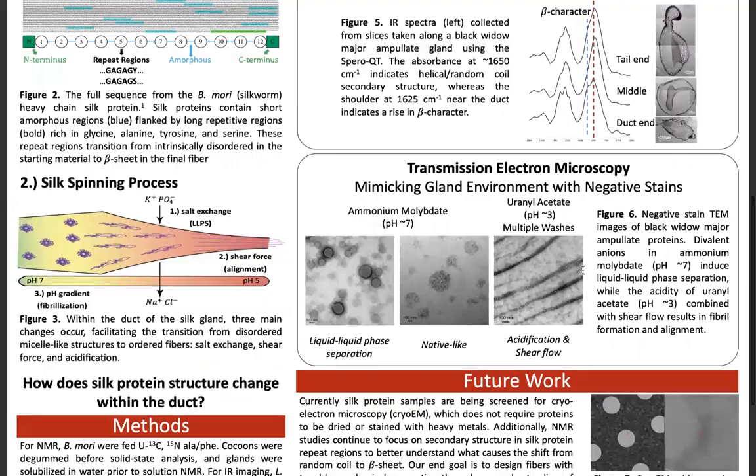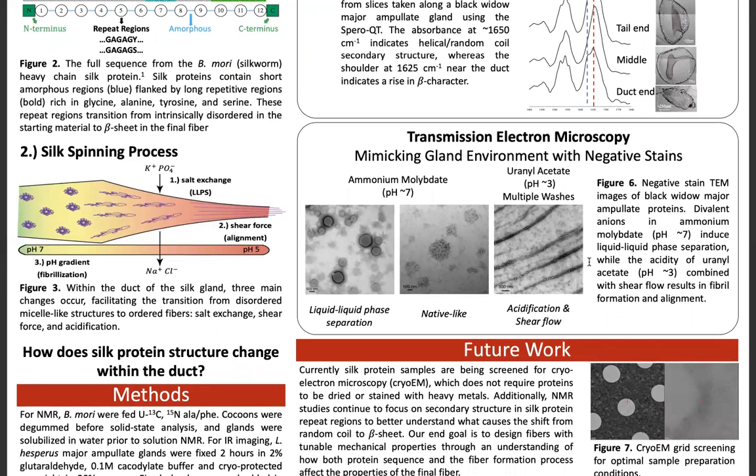Finally, I used transmission electron microscopy to try and mimic the gland environment with different stains. When I added ammonium molybdate, which has divalent anions in it, I saw both native-like structure and these dense droplets. But when I used uranyl acetate, which is more acidic, and multiple washes of water, I saw this fibrillization starting to occur.